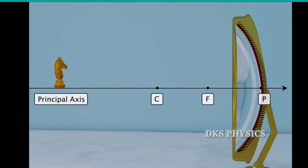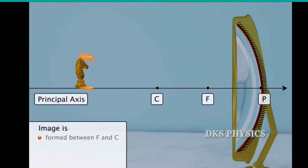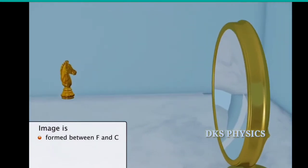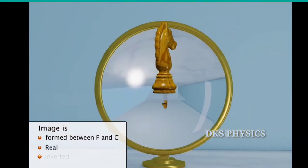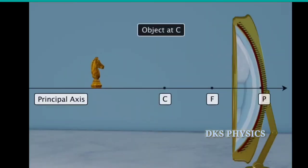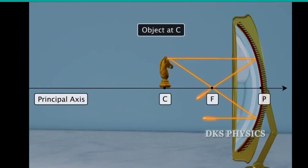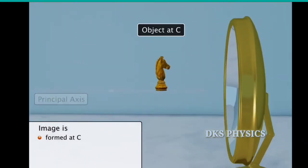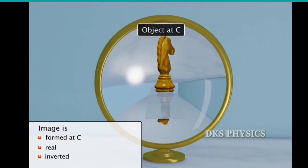When the object is beyond C, the image is formed between F and C, and is real, inverted, and diminished in size. When the object is at C, the image is formed at C and is real, inverted, and of the same size as the object.